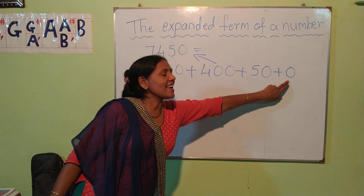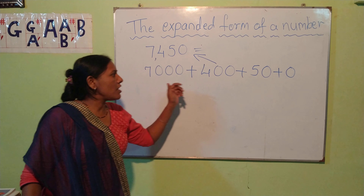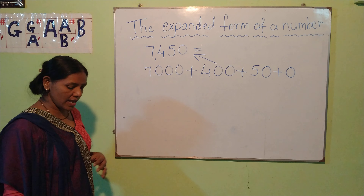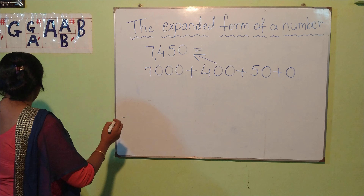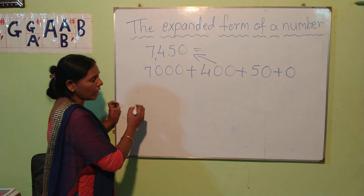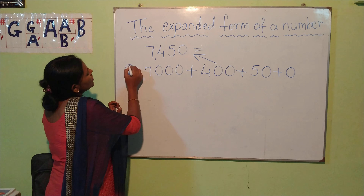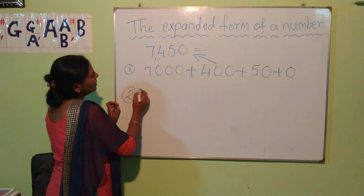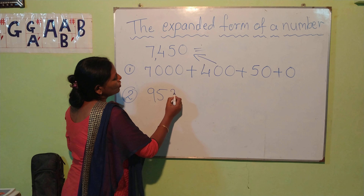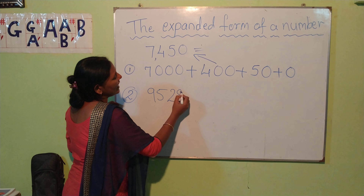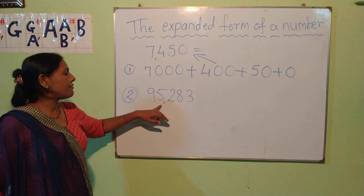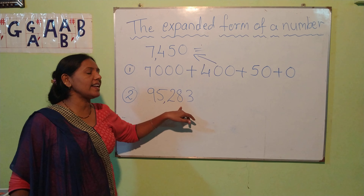This is called the expanded form — we have found out the value of each digit. Now we will take the next number: 95,283.